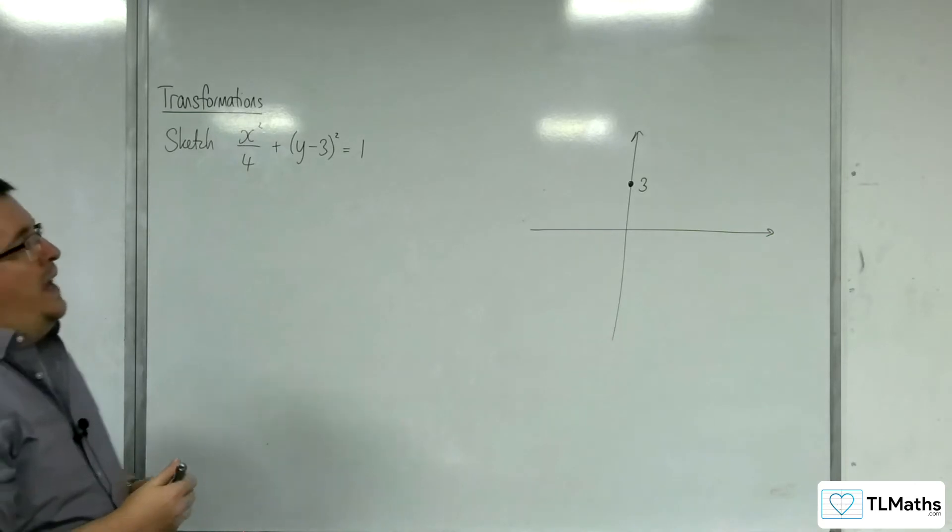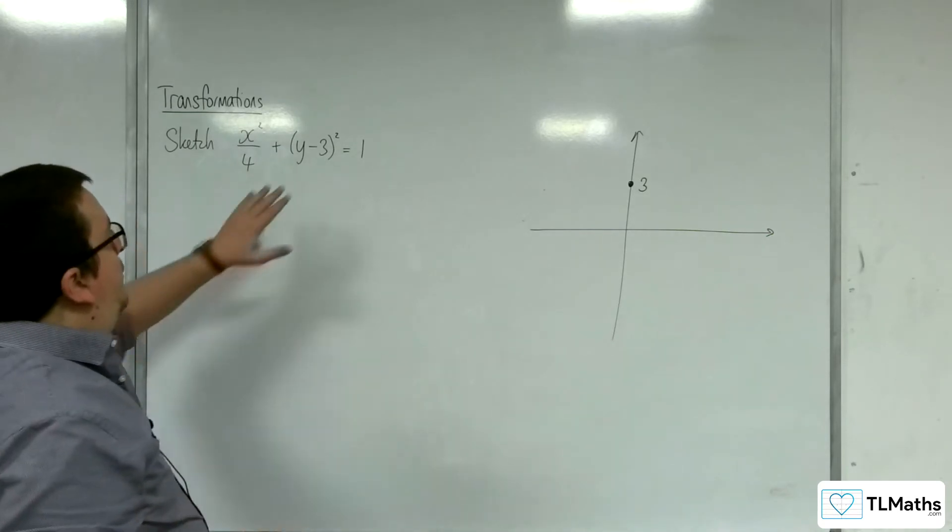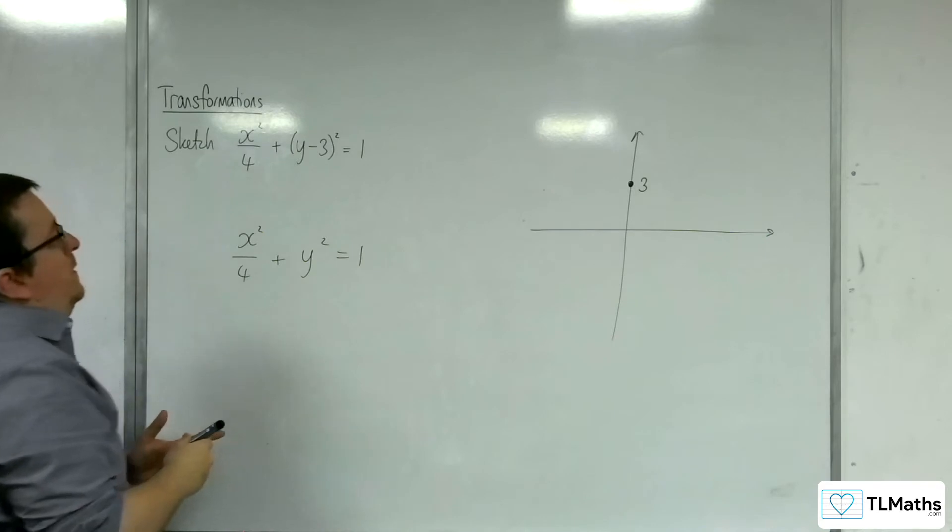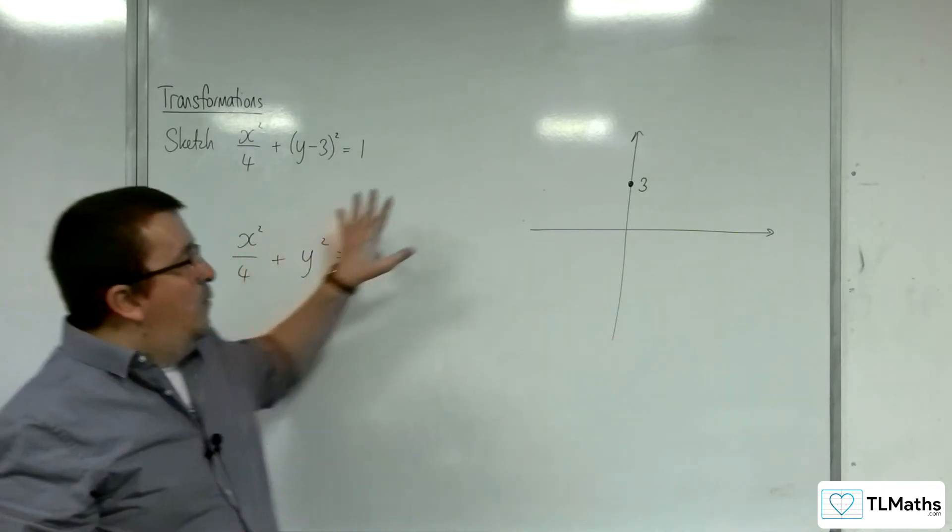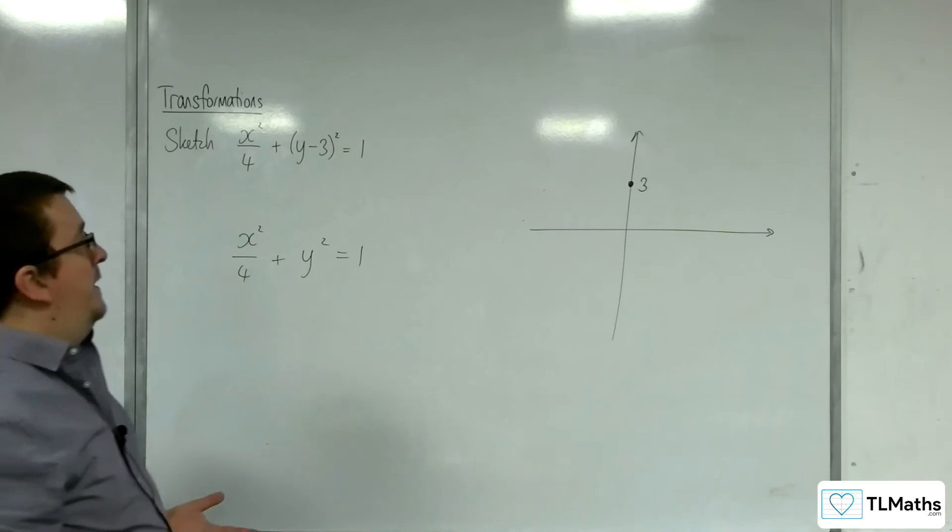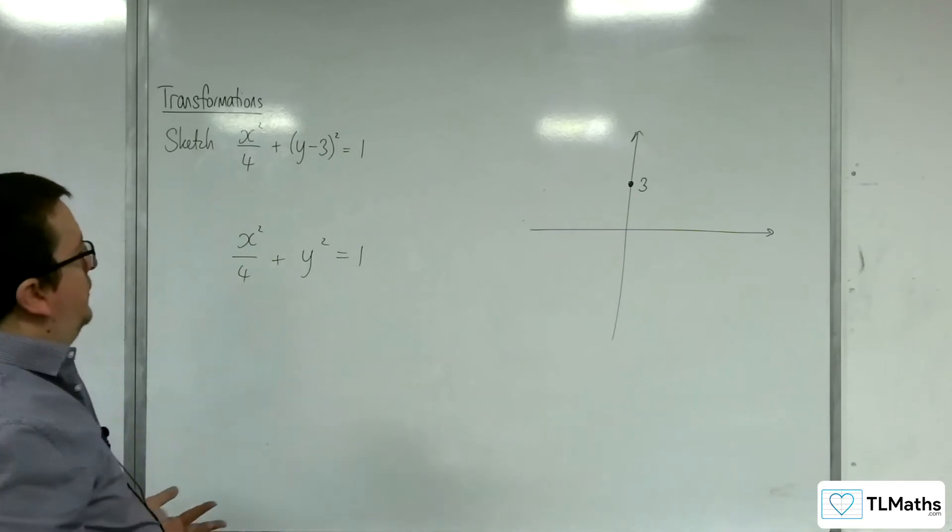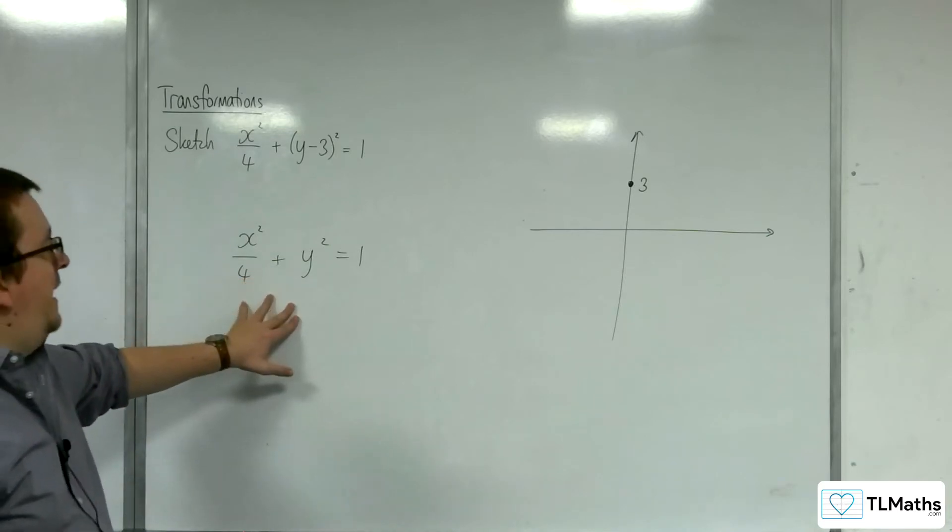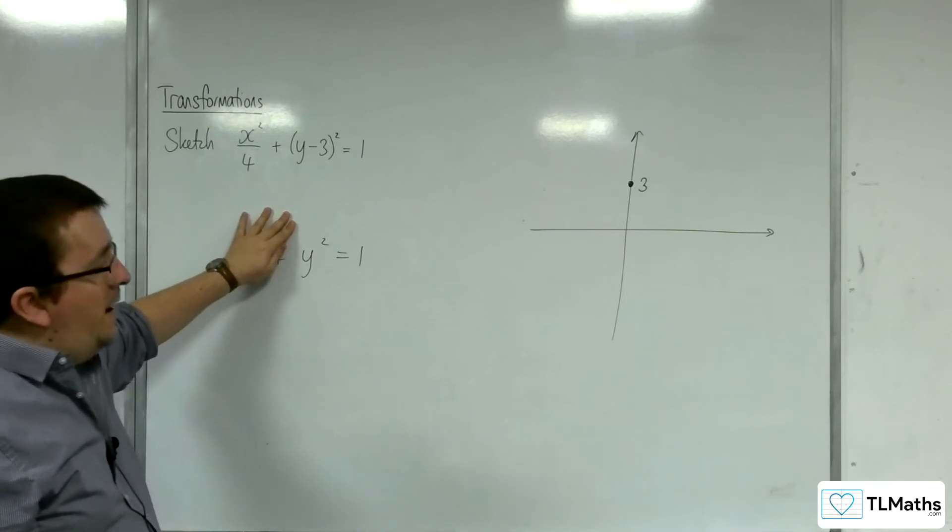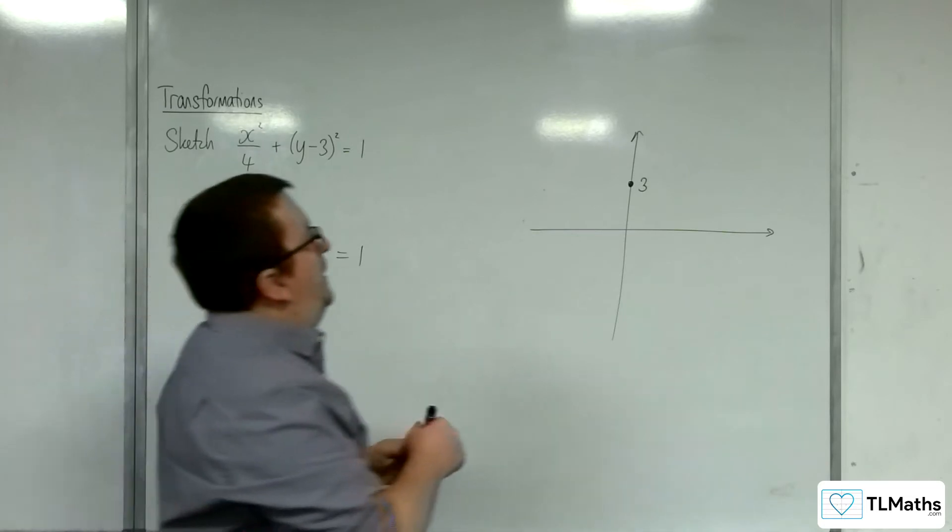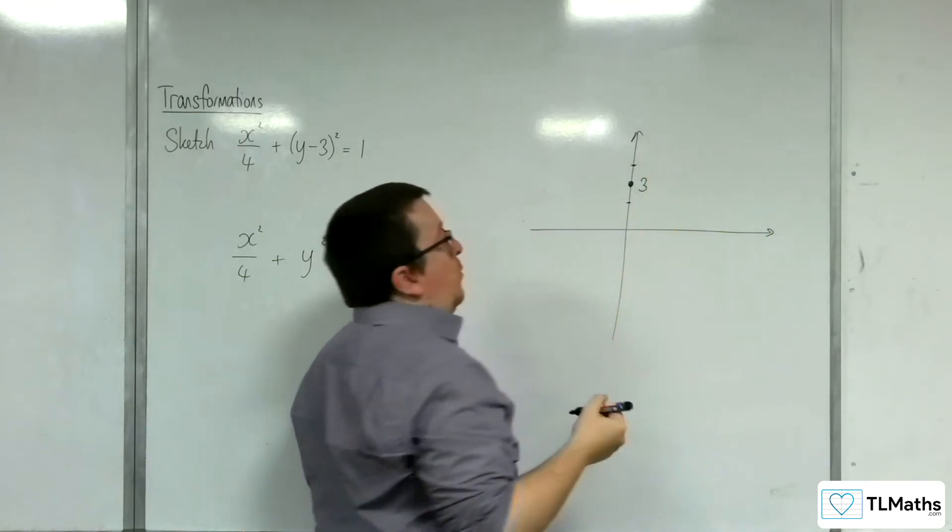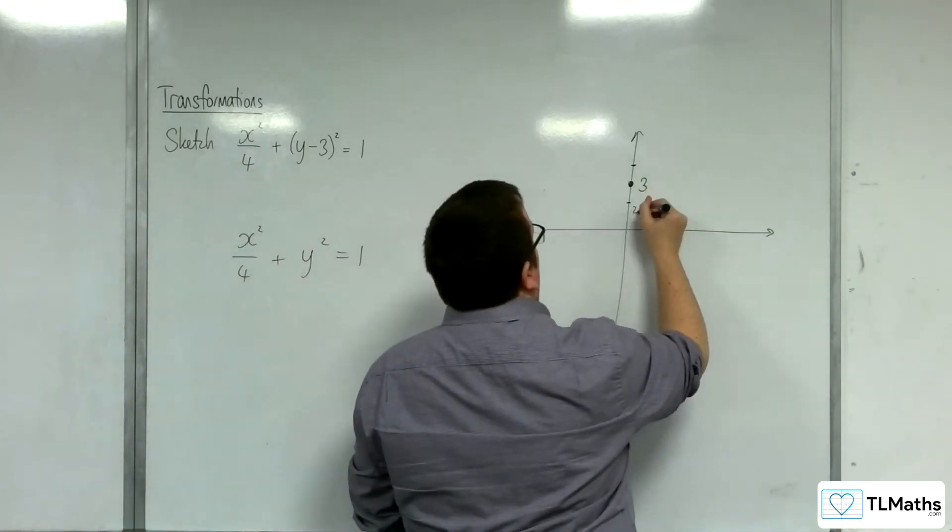Now, taking that into account, if now you were thinking, OK, well, if this was y squared, if we were looking at x squared over 4 plus y squared equals 1, then could I sketch that just now where that point is, so kind of superimpose it over? And you can think of it that way to help you out if you like. So if we had just been sketching this, we would have said when x is 0, y is going between minus 1 and 1. So that means that our ellipse must be going between 2 and 4, because it must be 1 either side of the 3. So 2 and 4.